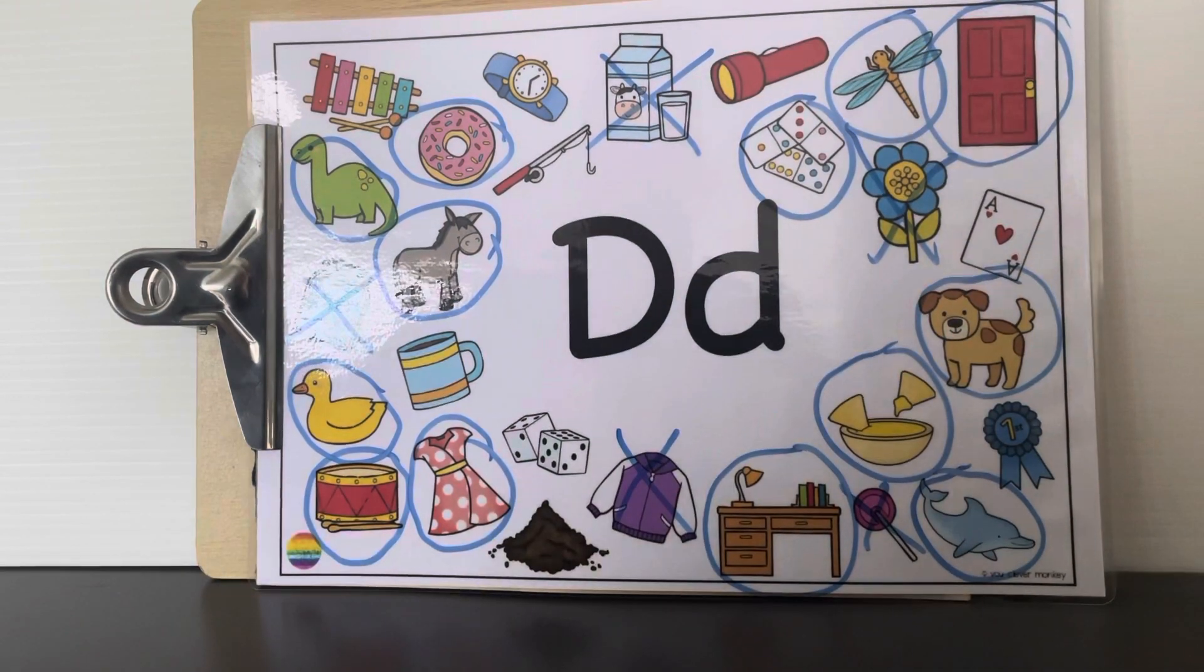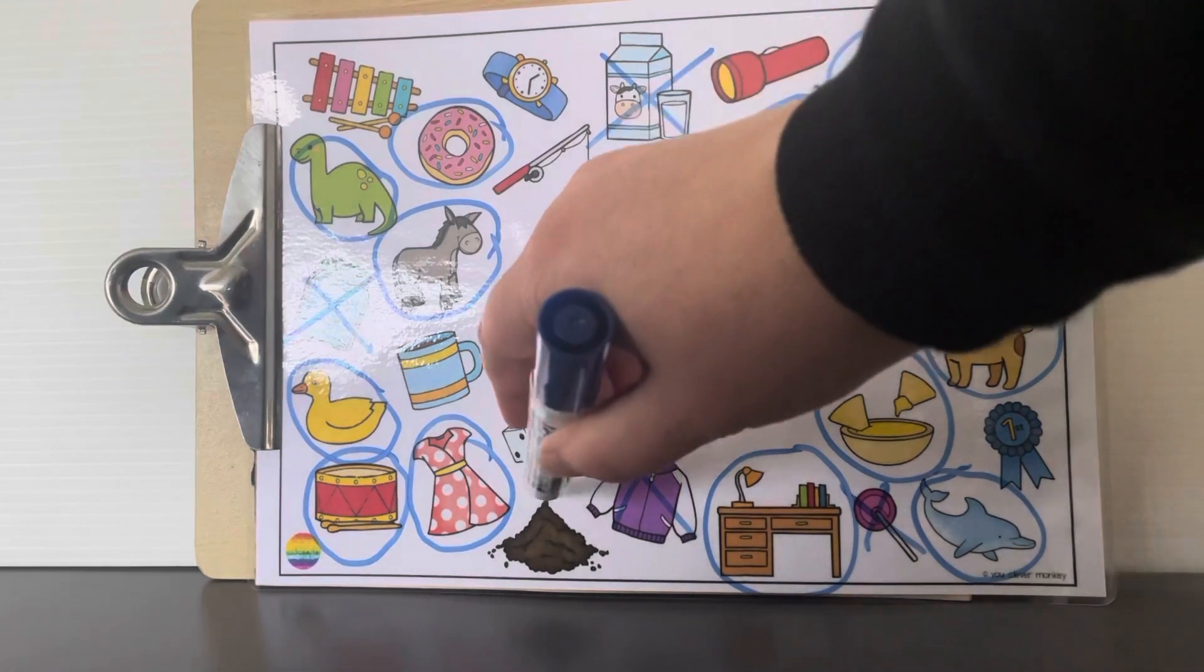What about this one? Dirt. Dirt. Can you hear a D at the start of dirt? Yeah. Let's give that one a circle.